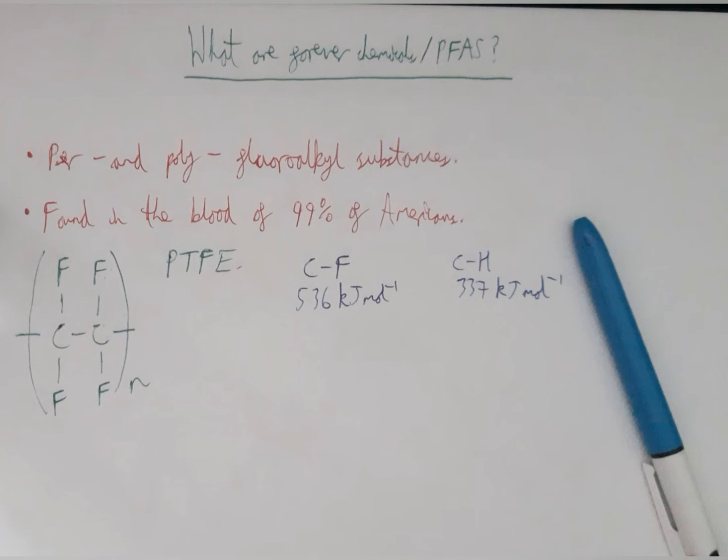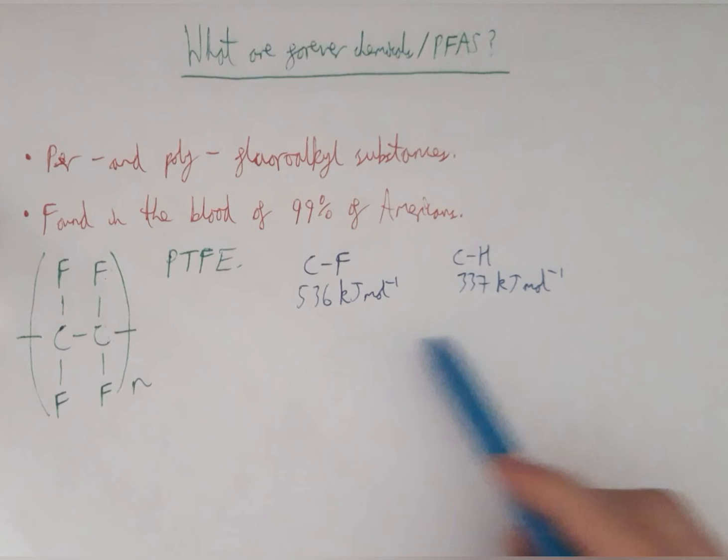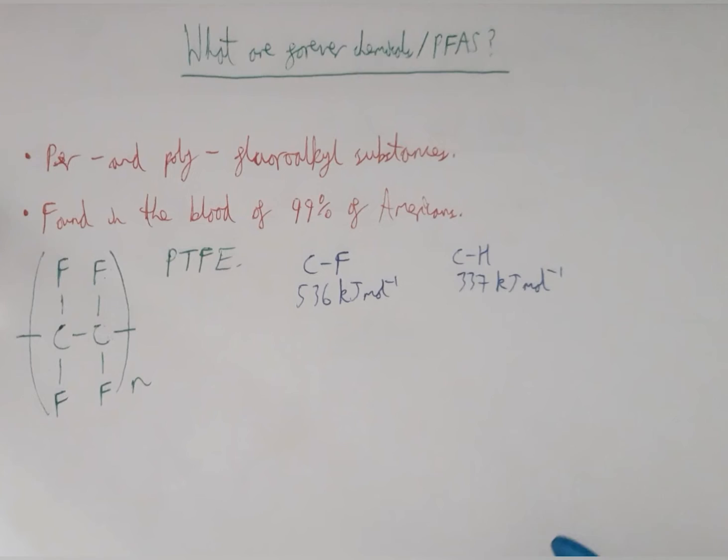Why they're called forever chemicals is due to the fact that the carbon to fluorine bonds are very strong, 536 kilojoules per mole, compared to a carbon to hydrogen bond of 337 kilojoules per mole. These chains of fluorine bonds prevent the carbons from being attacked by nucleophiles. They shield those inner carbon atoms. This is why they're called forever chemicals, because they aren't broken down very easily. They persist in nature.